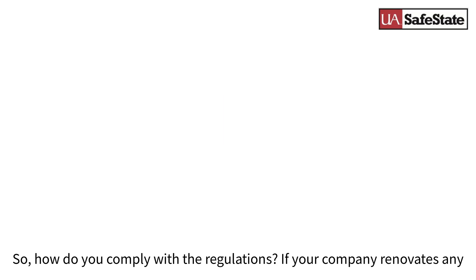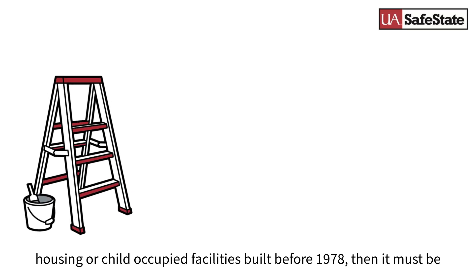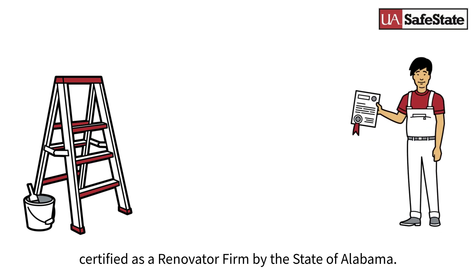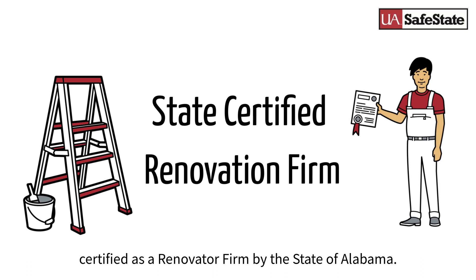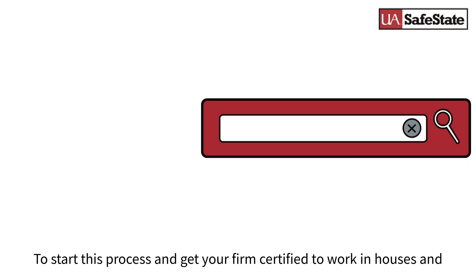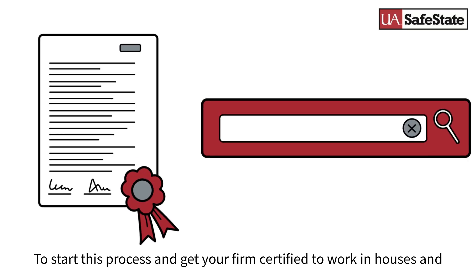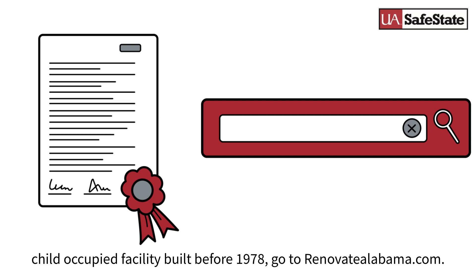So, how do you comply with the regulations? If your company renovates any housing or child-occupied facilities built before 1978, then it must be certified as a renovator firm by the state of Alabama. To start this process and get your firm certified, go to renovatealabama.com.